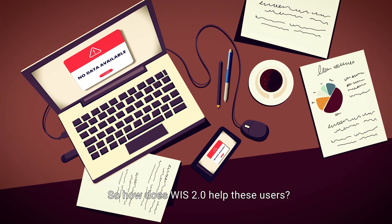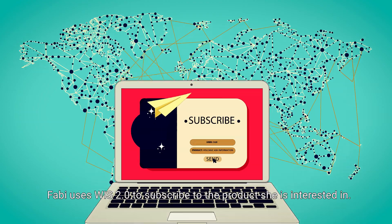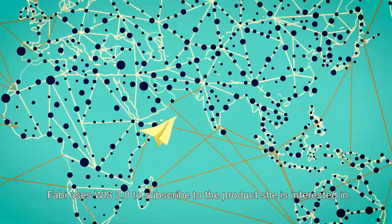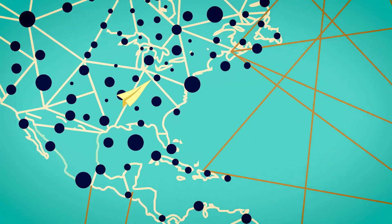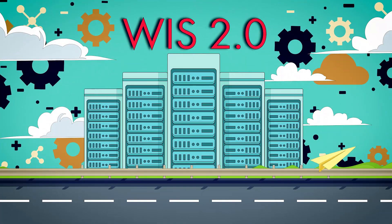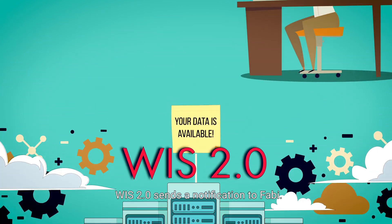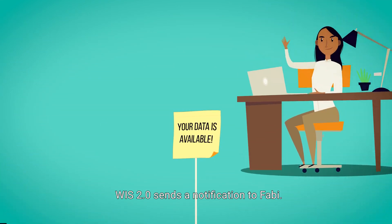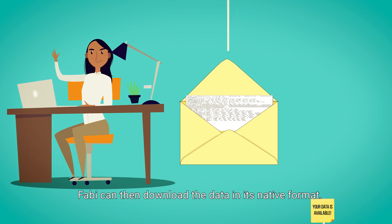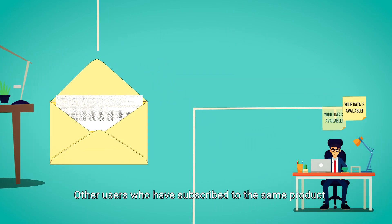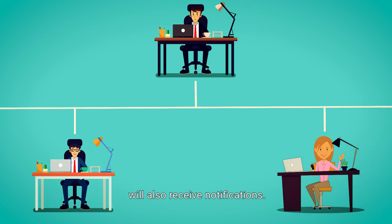So, how does WISC 2.0 help these users? Fabi uses WISC 2.0 to subscribe to the product she's interested in. Whenever new data for the product becomes available, WISC 2.0 sends a notification to Fabi. Fabi can then download the data in its native format. Other users who have subscribed to the same product will also receive notifications.